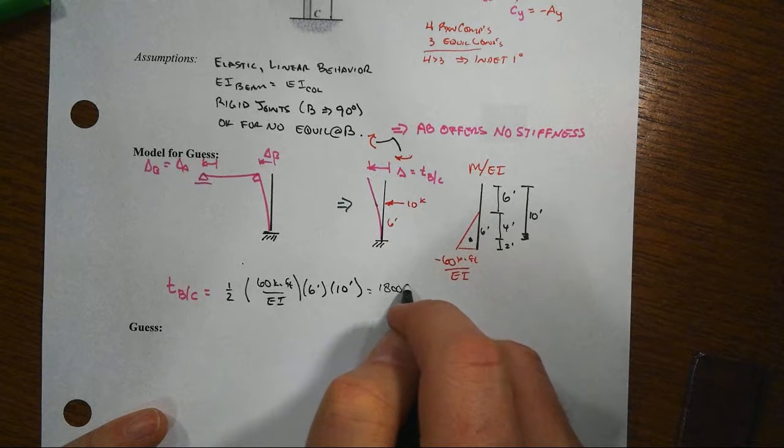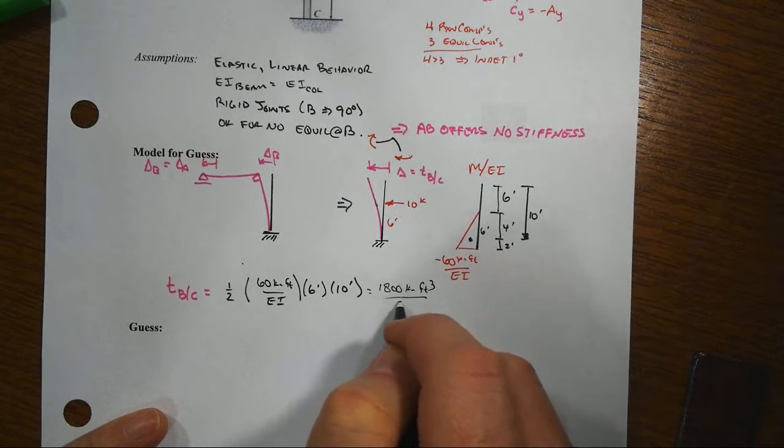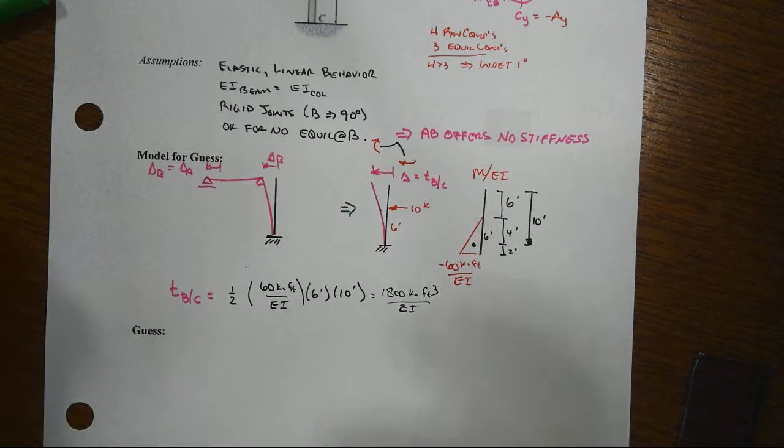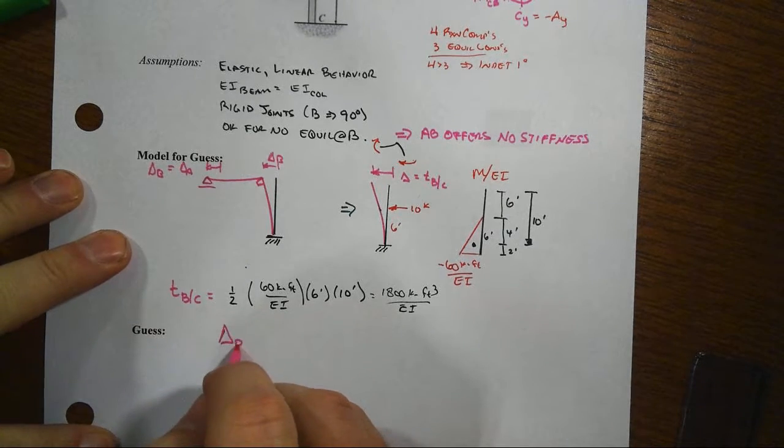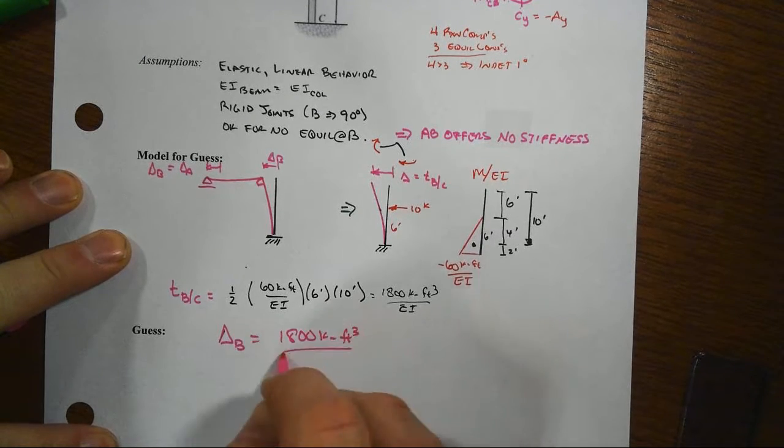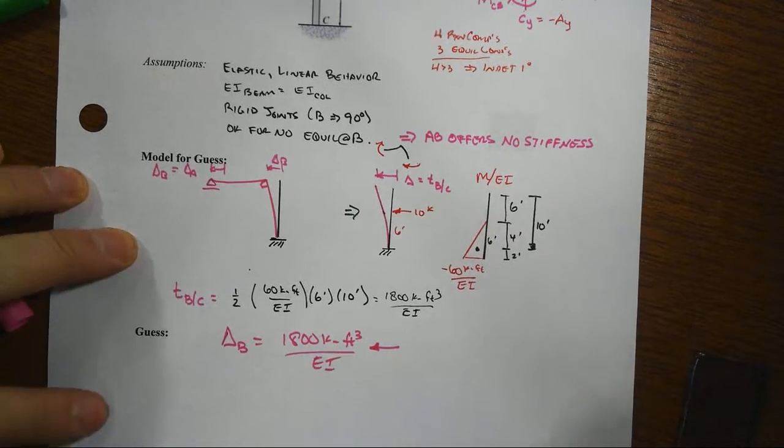So that would be 1800 kip foot cubed over EI. And that then would be my guess for delta B that it equals 1800 kip foot cubed over EI going to the left.